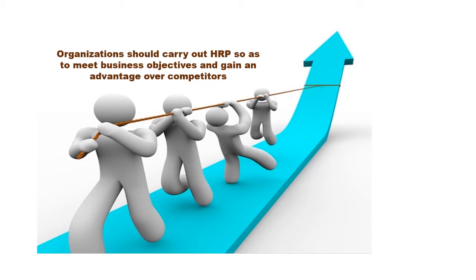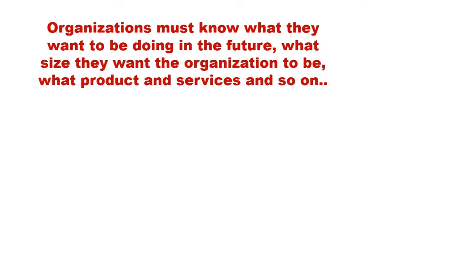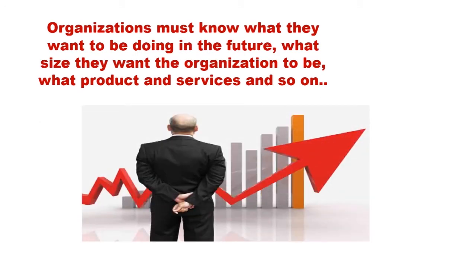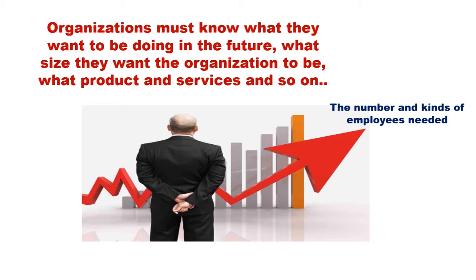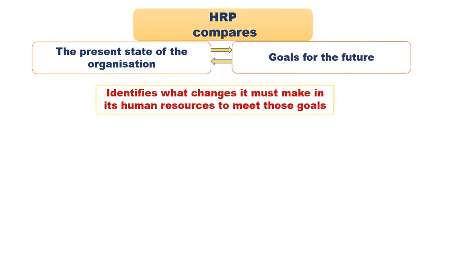Organisations should carry out human resource planning so as to meet the business objectives and gain an advantage over competitors. To do this, organisations need a clear idea of the strengths and weaknesses of their existing internal labour force. They must also know what they want to be doing in the future — what size they want the organisation to be, what products and services it should be producing. This knowledge helps them define the number and kinds of employees they will need. So basically, human resource planning compares the present state of the organisation with its goals for the future and then identifies what changes it must make in its human resources to meet these goals.